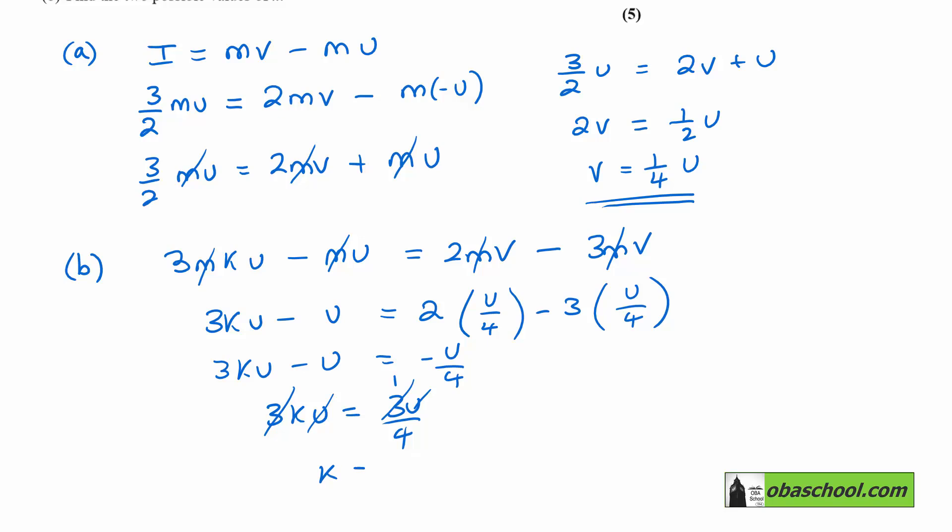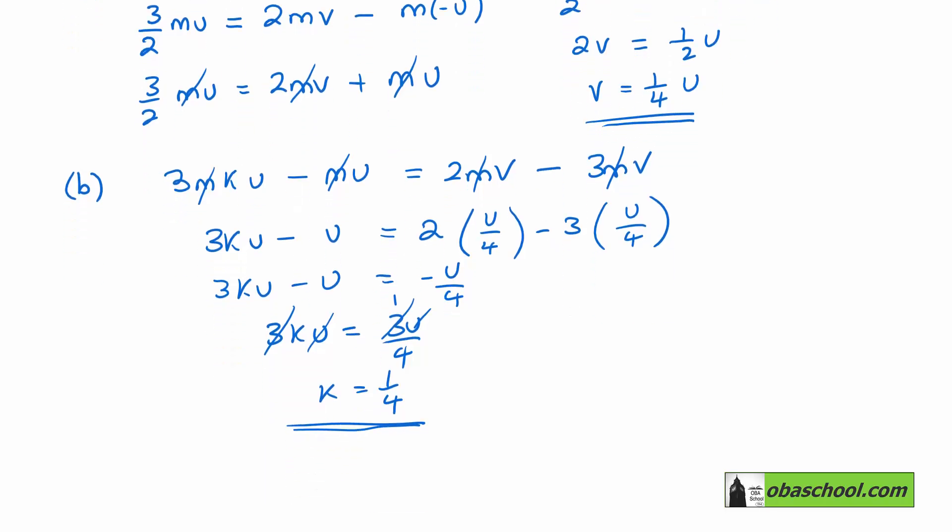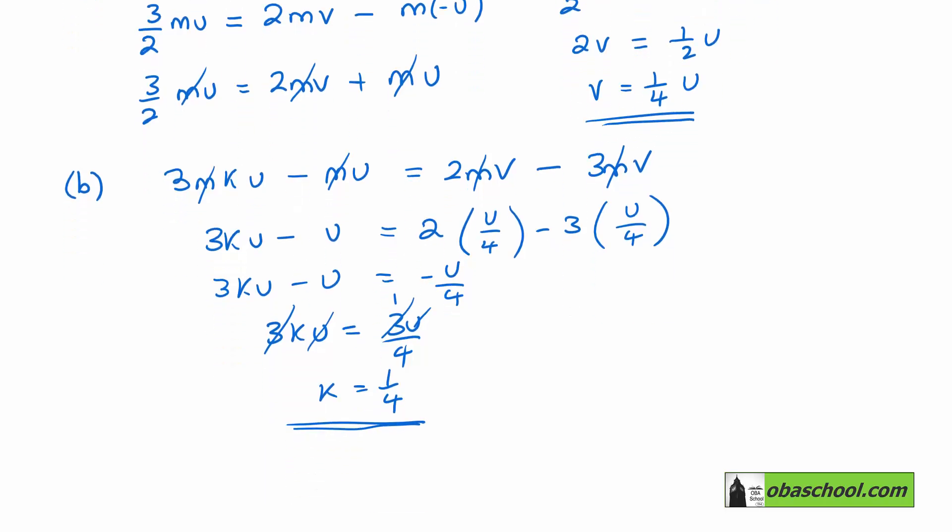Now we also want the situation where V goes in the other direction. In this case, the linear momentum will give us 3mKU take away mU equals 3mV plus 2mV. So this time it's a plus, as opposed to the minus we had before, because it's going in the other direction.